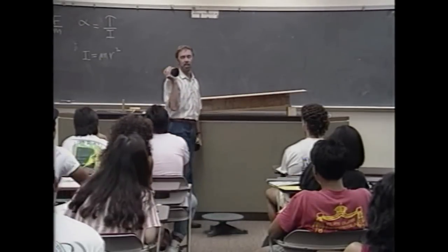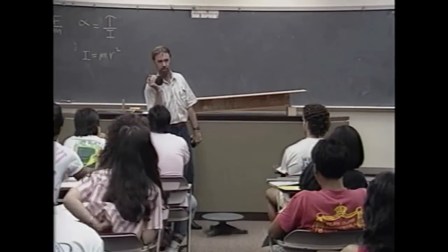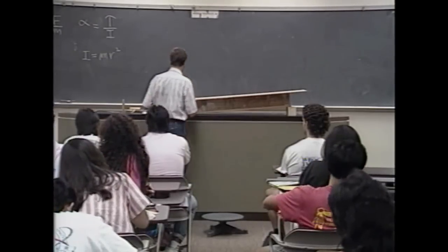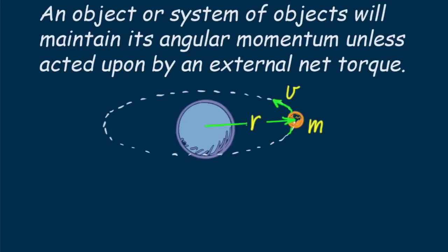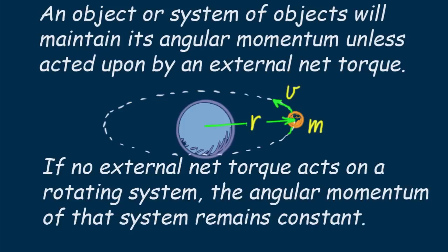There's another concept here called angular momentum. Just as linear momentum is conserved in the absence of a net impulse or net force, angular momentum is conserved if no net torque acts. We call this the conservation of angular momentum: if no external net torque acts on a rotating system, the angular momentum of that system remains constant. Angular momentum conservation is nicely employed by figure skaters and gymnasts, especially when spinning and executing other maneuvers.